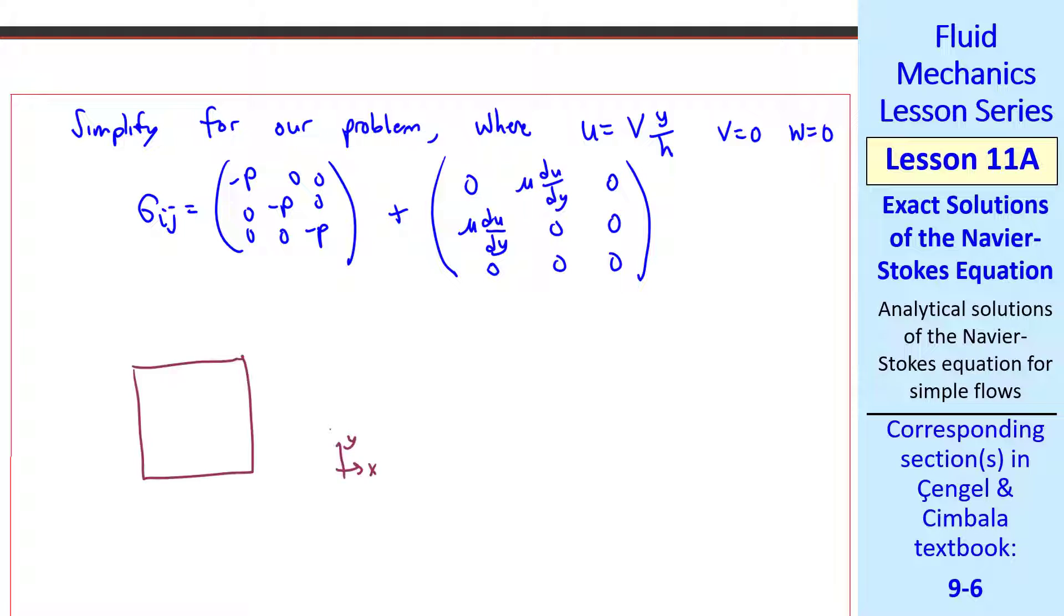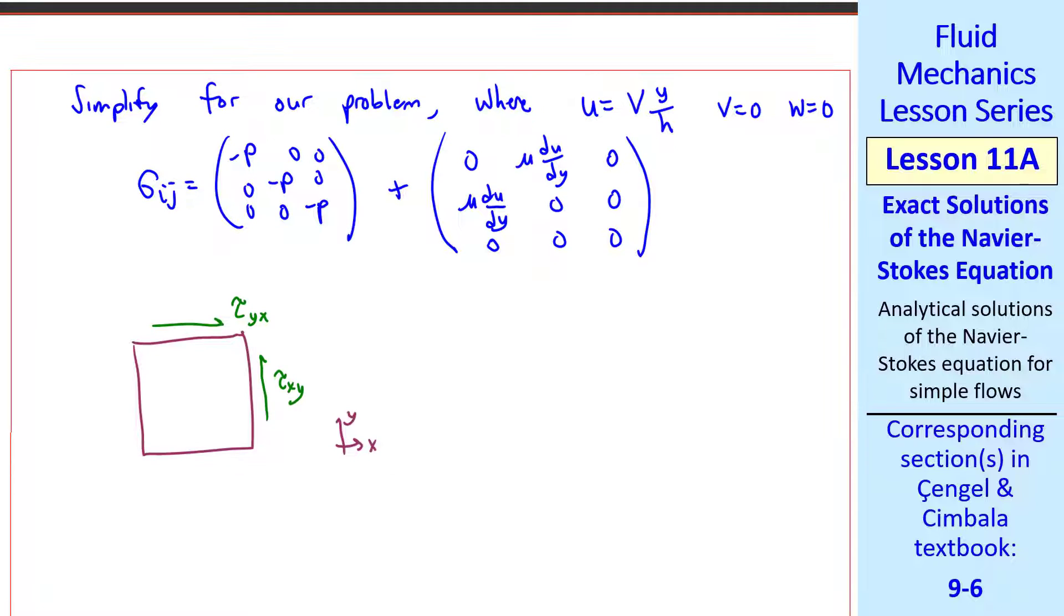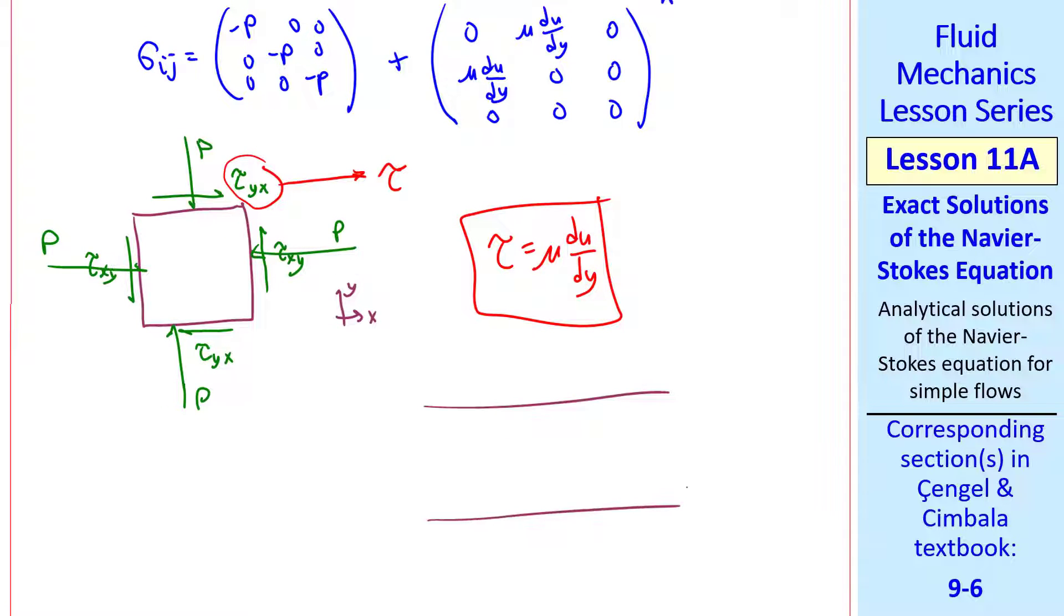Since this is a 2D problem, we draw our fluid element in the xy plane. Our deviatoric stress is tau yx on the top surface, tau xy on the right surface, and equal and opposite stresses on the opposite faces. Pressure acts uniformly at all four faces. For this simple problem, tau equals mu du dy. Since du dy is constant, it's a constant slope. Thus we can calculate the force needed to push this wall per unit depth and length, which we've done before.